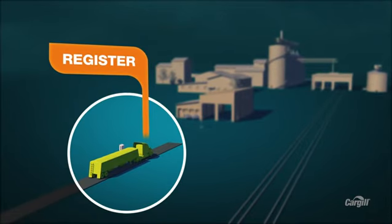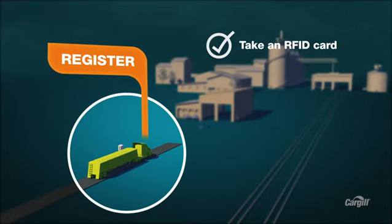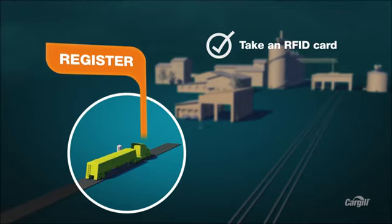Drive up to the registration kiosk and take an RFID card. You'll get a unique card every time you deliver grain. Keep it handy because you need it as you move through the facility.